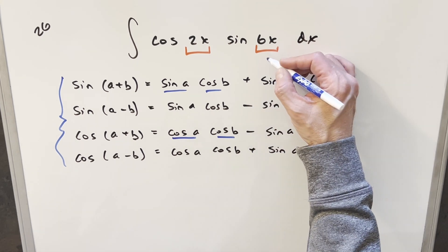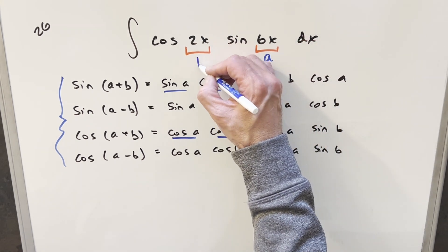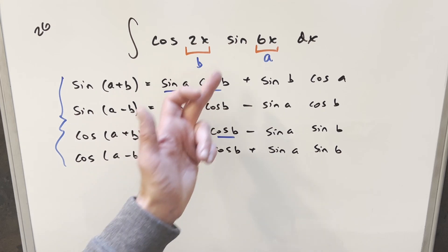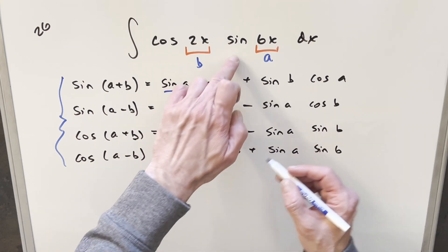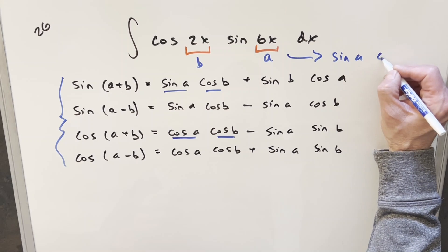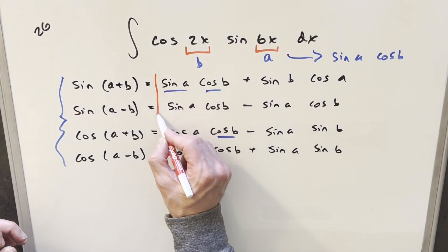So now coming back to our integral, let's just kind of label, we'll say 6x is going to be our a value, and 2x is going to be our b value. So what I want to do is look at our angle sum, angle difference formulas, and look at which one of these is going to help us in this case. Because what we want in this case is we're going to want a value for, I can write this as sine a cos b.